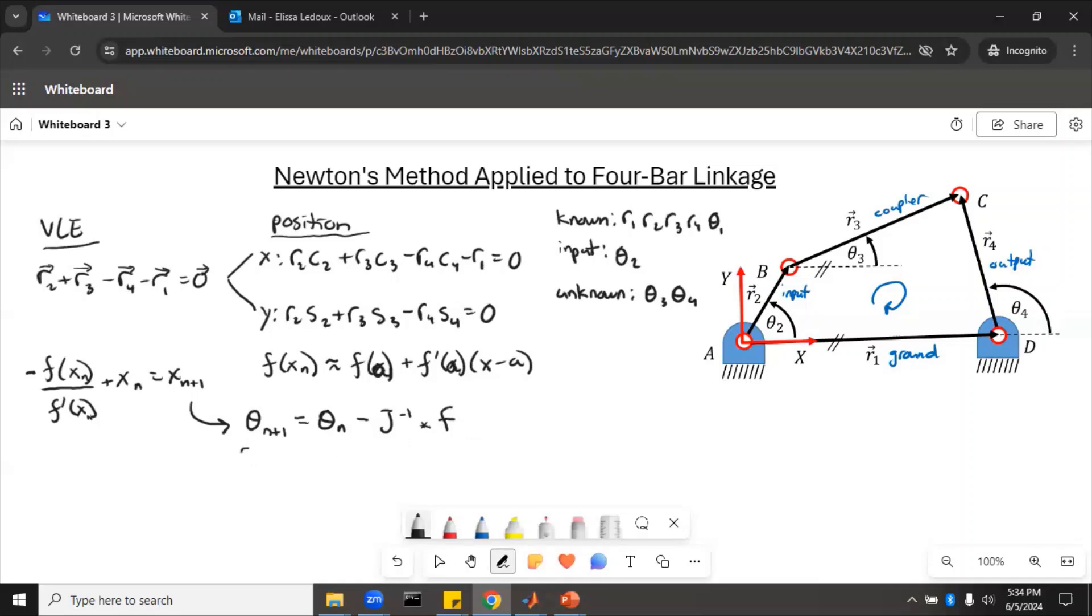Okay, so these are all matrices, so theta is going to be theta 3, theta 4. And that is n plus 1, so the new guess equals theta 3, theta 4, before minus j inverse times our f, which is the x and the y from the position scalars. So this is the formula that we would use to solve that vector loop.